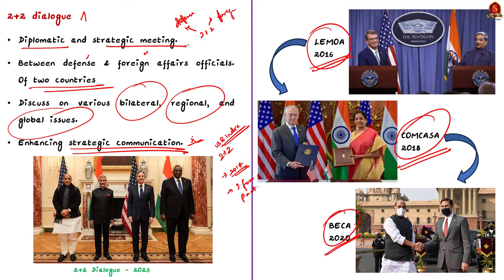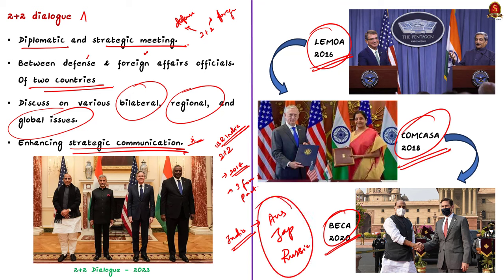Besides the USA, India also has 2+2 dialogues with three other strategic partners: Australia, Japan and Russia. This is all about the discussion on 2+2 dialogue. With these learned points, let us move on to the next news article for our discussion.